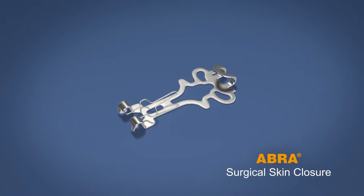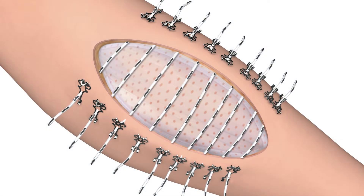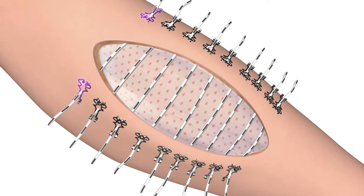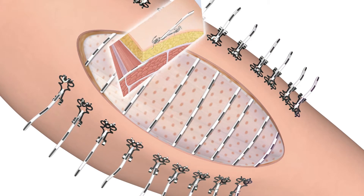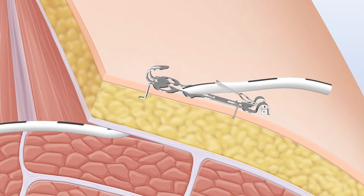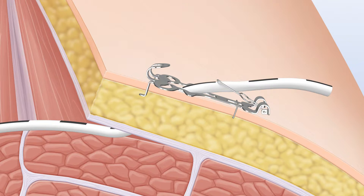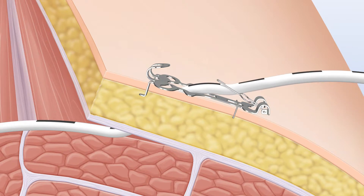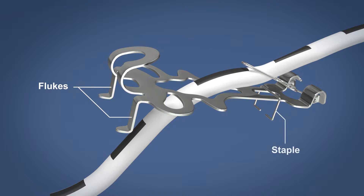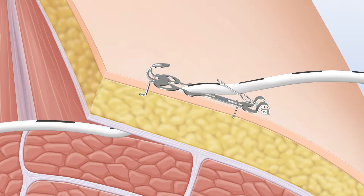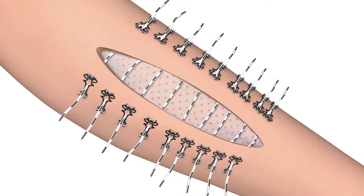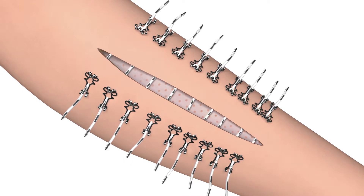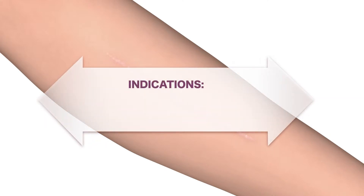Abra Surgical is indicated for use with high tension retracted skin defects. The device applies appositional forces through stainless steel anchors that are fixed to the skin and elastomers that are placed subcutaneously. With tension, the wound margins are averted to inhibit granulation and to maintain healthy, viable margins. A wire cleat secures the elastomer and enables easy tension adjustments. Stainless steel flukes and a rear staple engage the skin's full thickness to distribute closure forces evenly. Abra Surgical restores normal skin integrity, normalizes compartment pressures, and achieves a primary closure, eliminating the need for a skin graft.